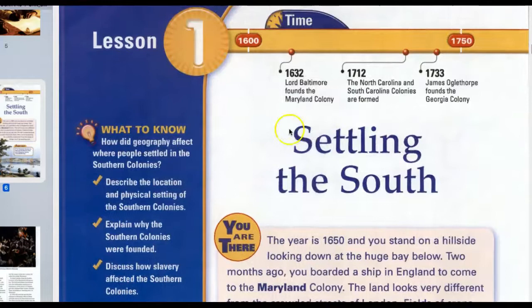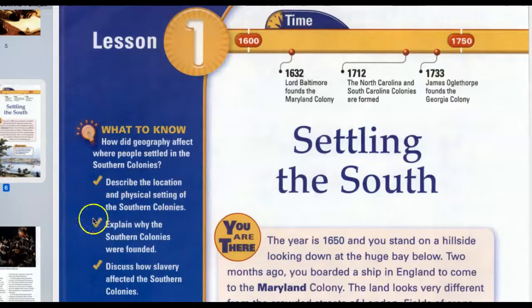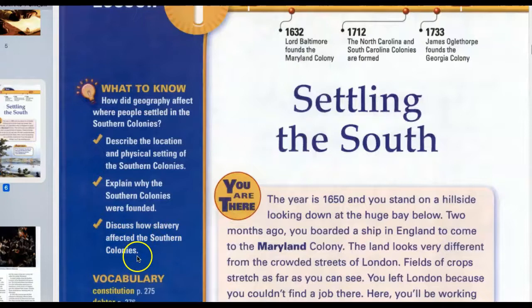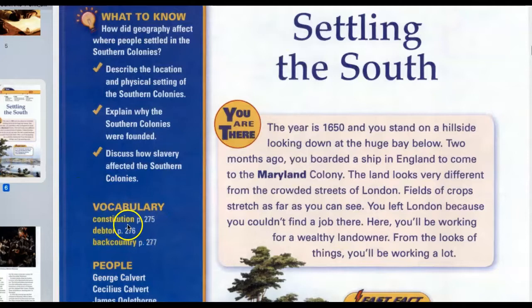What to know? How did geography affect where people settled in the Southern Colonies? Describe the location and physical setting of the Southern Colonies. Explain why the Southern Colonies were founded. Discuss how slavery affected the Southern Colonies. Words to know from Quizlet: constitution, debtor, backcountry.